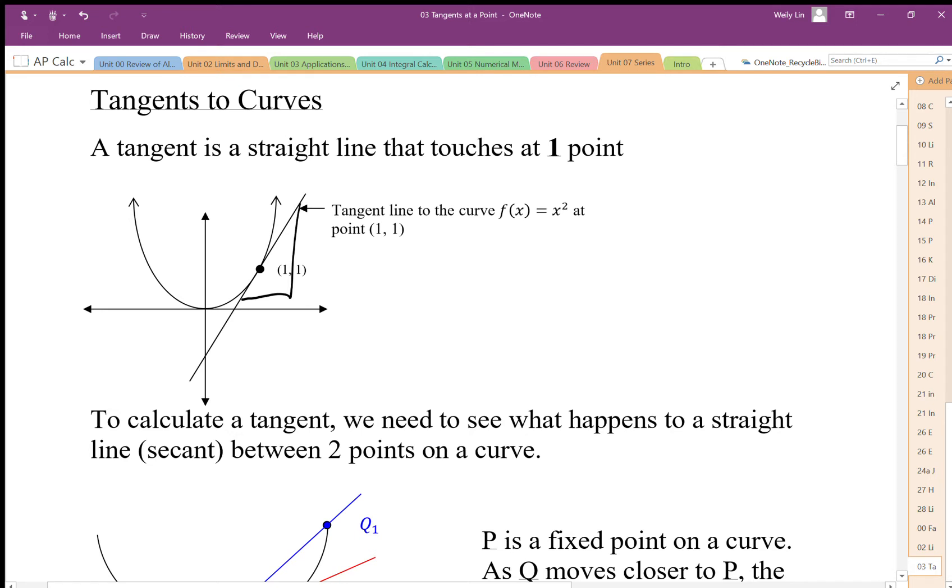So I want to calculate that slope. The problem is, when I calculate slope - slope is the change in y divided by the change in x - well, the change in y at that point ends up being zero, and the change in x is going to be zero.